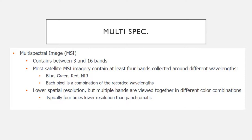What is multispectral? Multispectral imagery, or MSI, typically contains between three and sixteen bands — a limited number but still a lot of utility. Most satellite multispectral imagery contains at least four bands approximating blue, green, red, and near-infrared. Each pixel is a combination of these recorded wavelengths. They have lower spatial resolution, but multiple bands are viewed together in different color combinations — typically four times lower resolution than panchromatic.